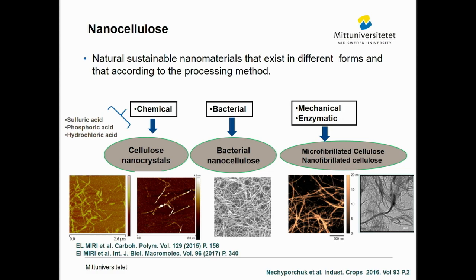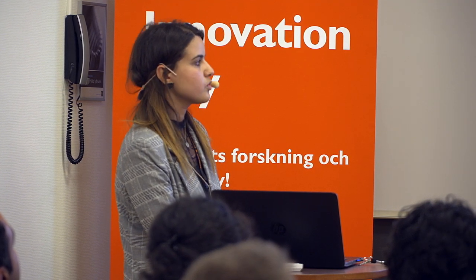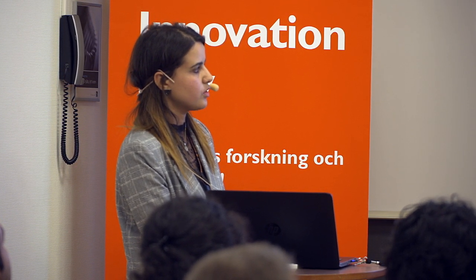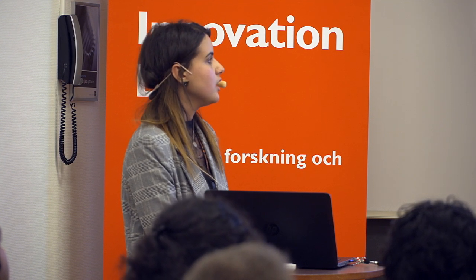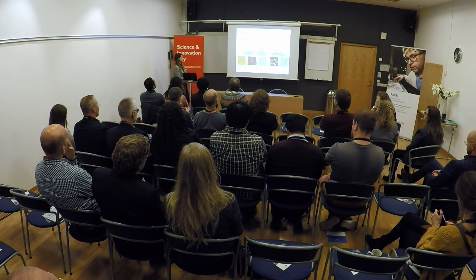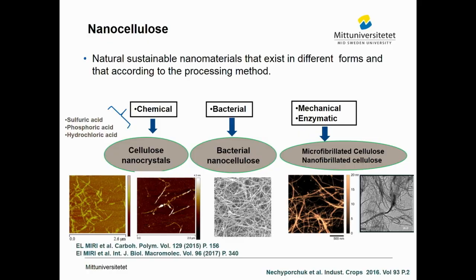There are three main methods to extract nanocellulose or cellulose nanocrystals. The first is mechanical and enzymatic processing, which gives microfibrillated cellulose and nanofibrillated cellulose, ranging from microns in length and nanometers or micrometers in diameter. The second is bacterial cellulose. The third is chemical processing via acid hydrolysis, using different acids like sulfuric acid, phosphoric acid, hydrochloric acid, citric acid, and mixtures of acids to obtain cellulose nanocrystals.